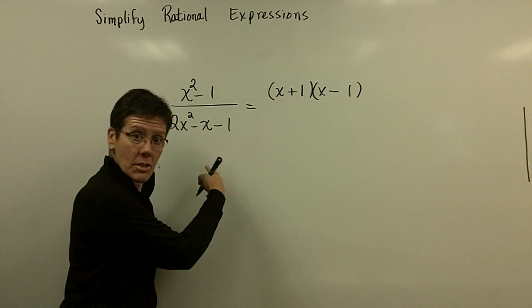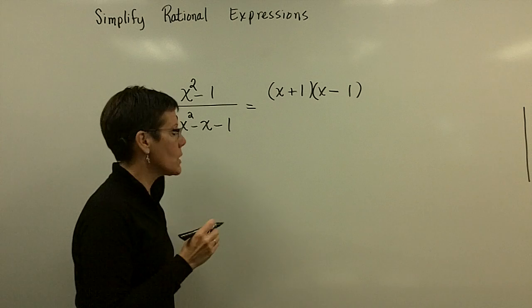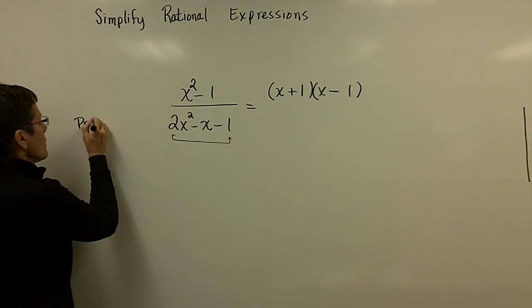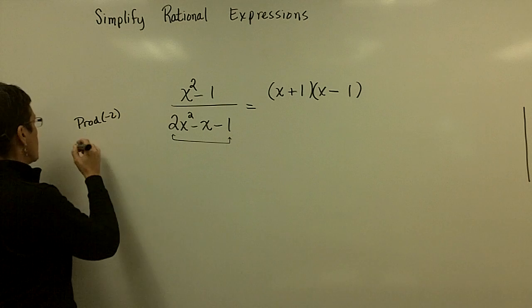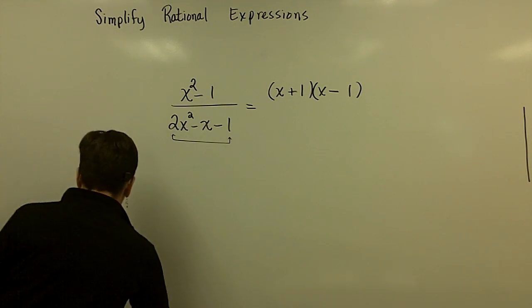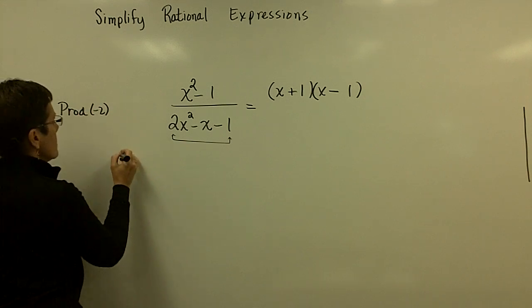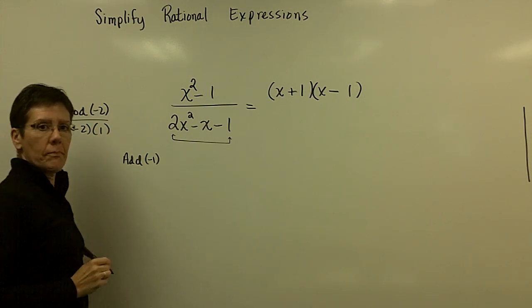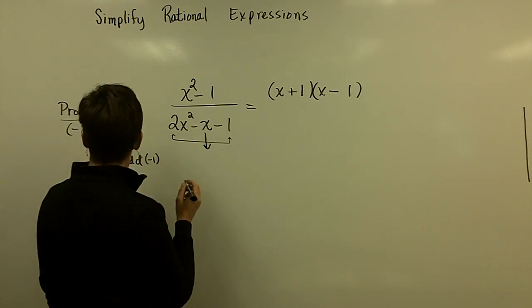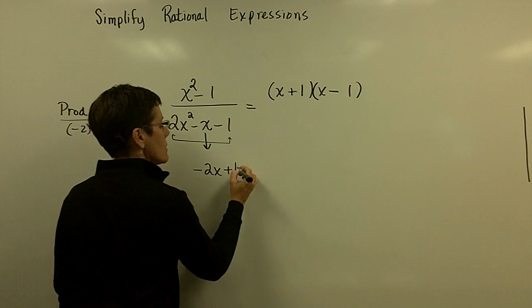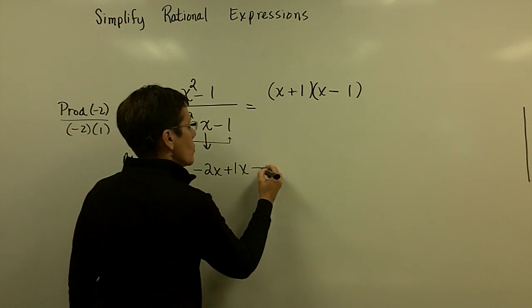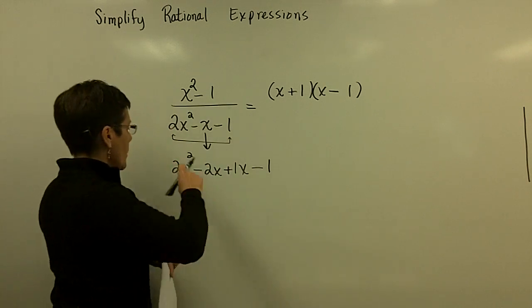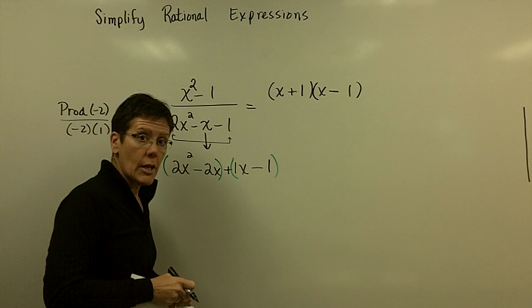I can use guessing and checking to factor this. I could use that AC method. I might just remind you of it really quick. So the AC method is to multiply and find two numbers whose product is a negative 2. And I want them to, boy, I'm not leaving myself enough room here. Let's try that again. The product is a negative 2 and adds to be the coefficient, which is a negative 1. And those two numbers are a negative 2 and a positive 1. And so what we do is we break this minus 1x into a minus 2x and a positive 1x. Because again, don't those combine to be a minus 1x. We bring our minus 1 down. We bring this 2x squared down.